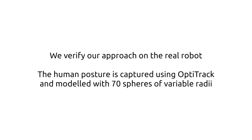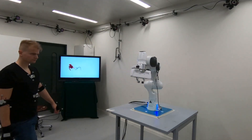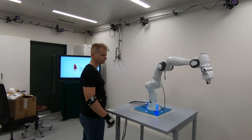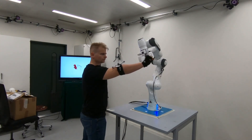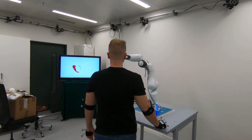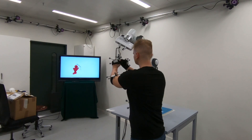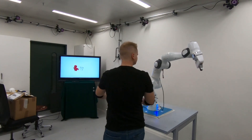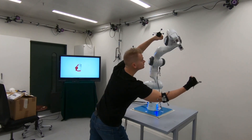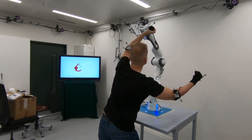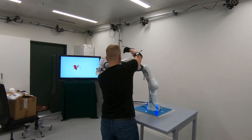We demonstrate our approach with a real robot application. The human is captured with the OptiTrack and is modeled with 70 spheres of different radii. The human tries to obstruct the robot motion with arm traps of progressive complexity. The robot still finds a way to reach the attractor without falling into collision. Even the concave arm trap cannot prevent the robot from reaching the goal. The robot dynamically adapts to the continuously changing environment and finds its way to the attractor.